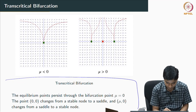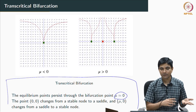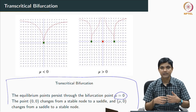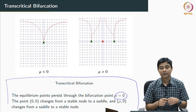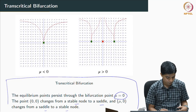In the transcritical bifurcation, the equilibrium points exist for all values of mu — both for mu less than 0 and mu greater than 0. The only thing that changes, in contrast to what happened before where equilibrium points disappeared, is that the equilibrium points persist but flip their characteristics: origin changes from stable to saddle, and (mu, 0) changes from saddle to stable node.